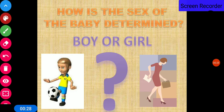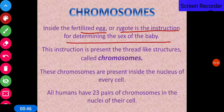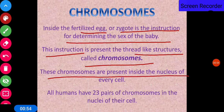How is the sex of the baby determined — boy or a girl? This question must have arisen in your mind. The chromosome inside the fertilized egg or zygote contains the instructions for determining the sex of the body. These instructions are present in thread-like structures called chromosomes, which are present inside the nucleus of every cell.